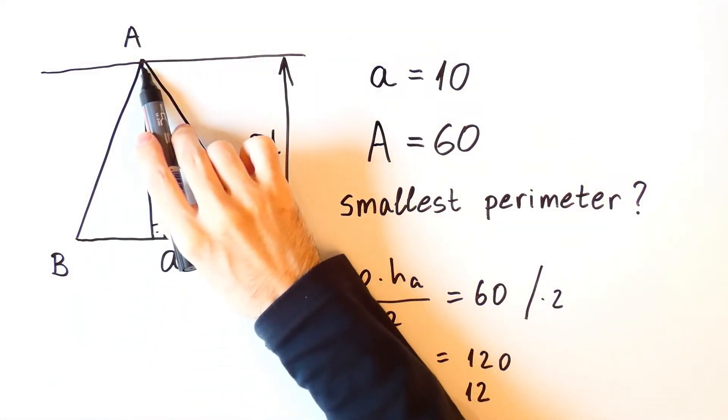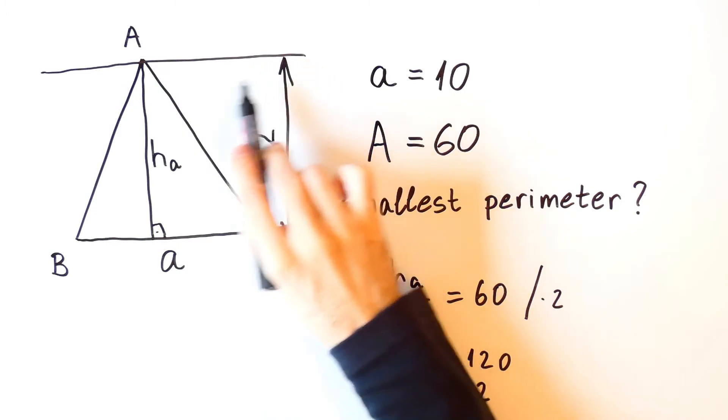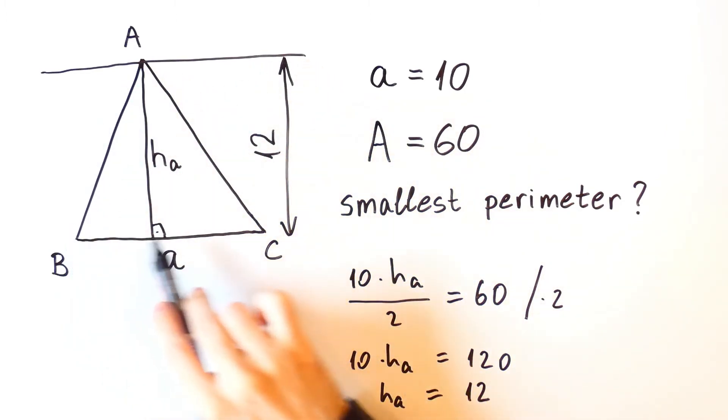So we want to find such point A on this line so that the perimeter of the triangle ABC is the smallest possible.